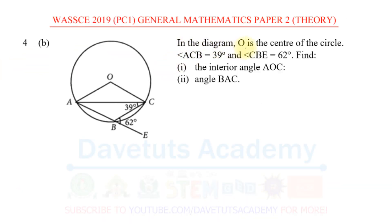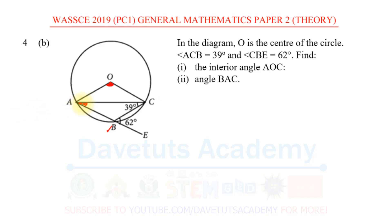Here, in the diagram, we are told that O is the center of the circle. Angle ACB is 39° and angle CBE is 62°. We are to find the interior angle AOC and the angle BAC, both of which I will also show in red.